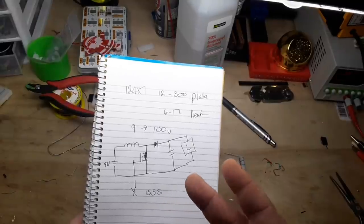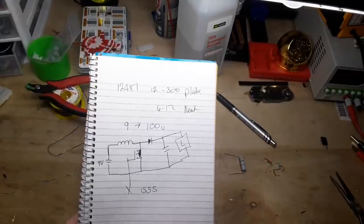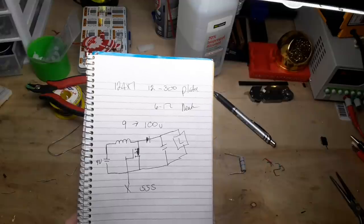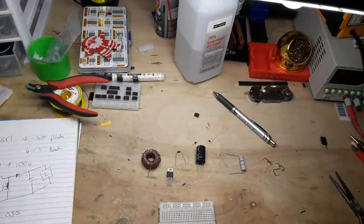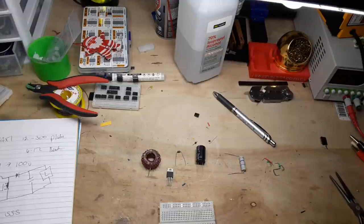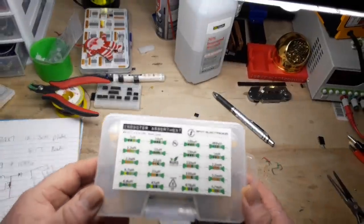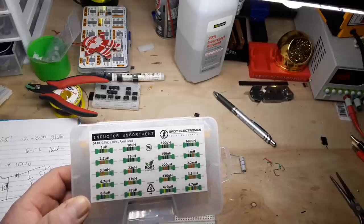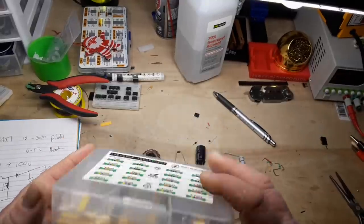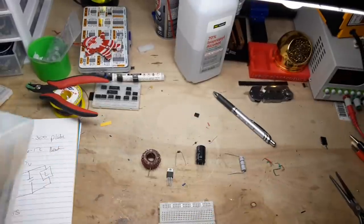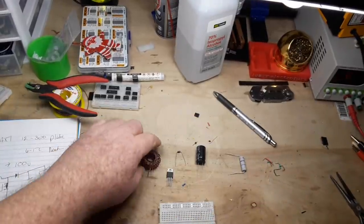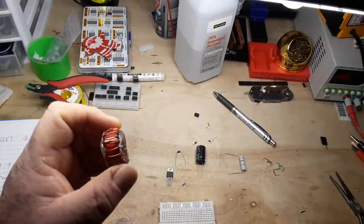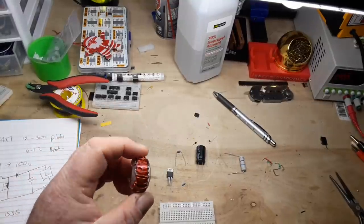We used the Adafruit calculator and it said we needed an inductor of at least 0.56 microhenries. Now I got this nice little inductor kit here and we definitely have the sizes we need, but these are tiny inductors. I don't want to use them. I want to use something meatier, so I wound my own inductor using magnet wire and a toroid.